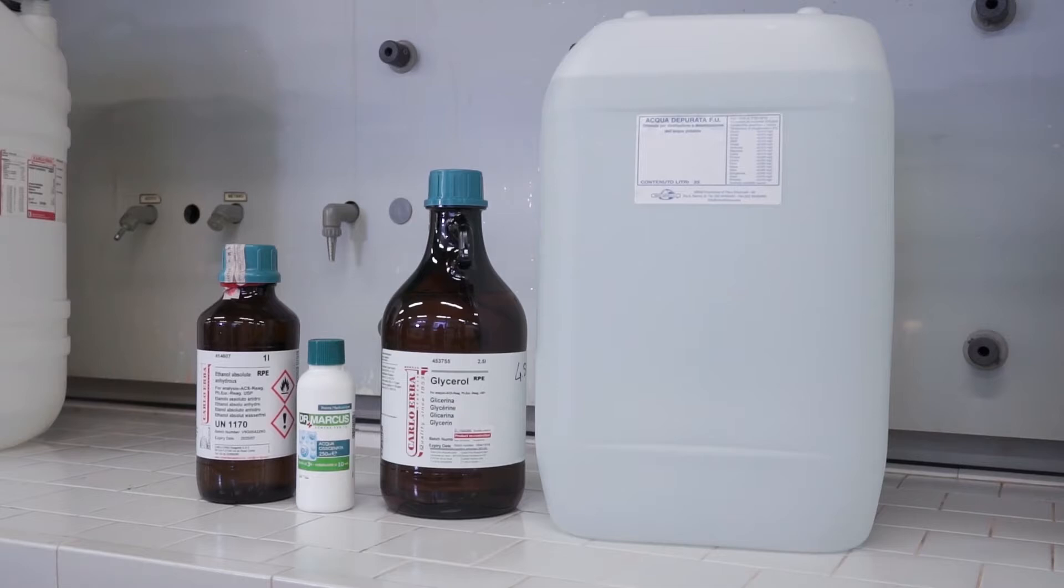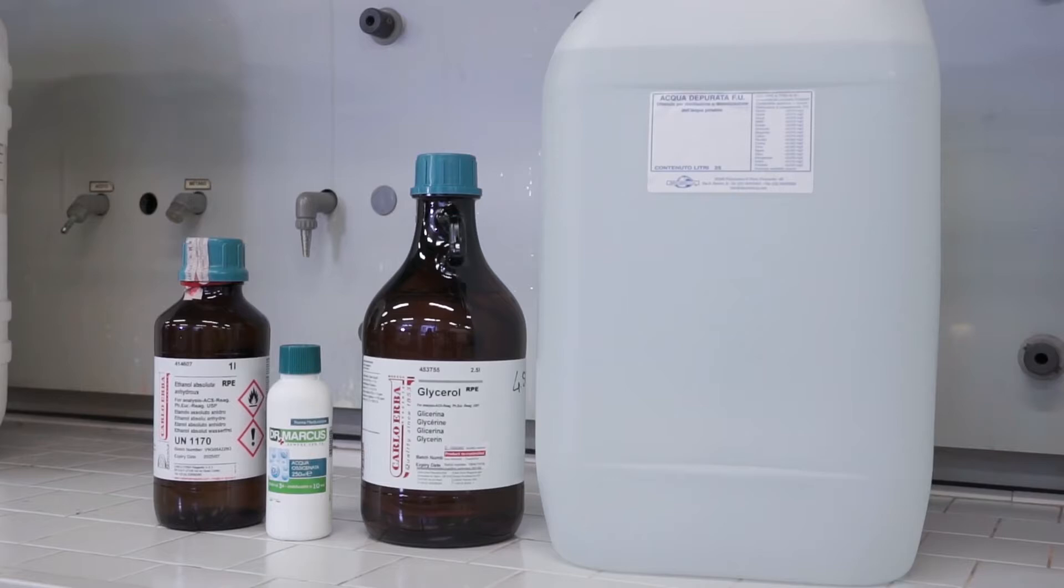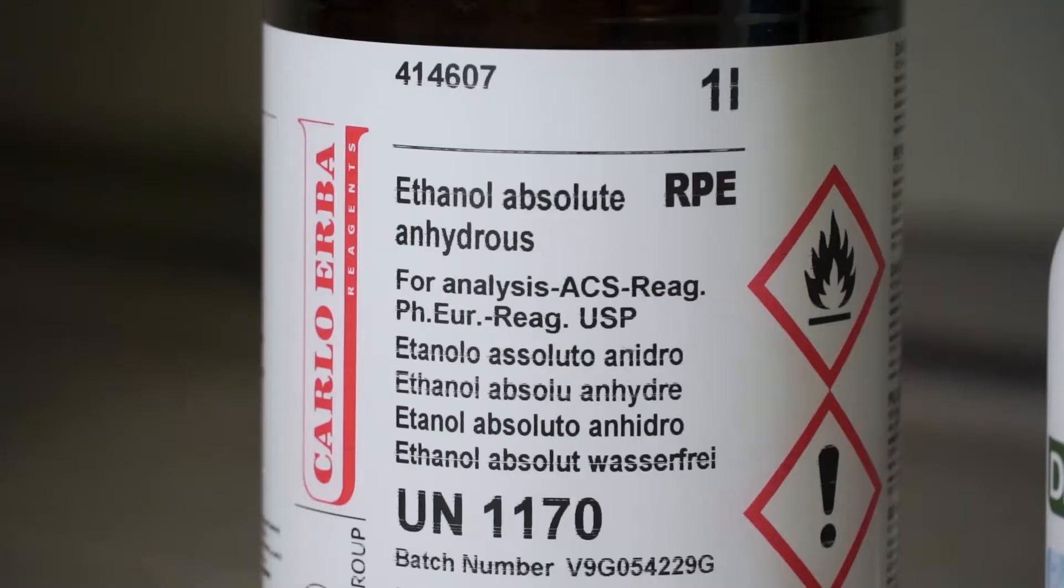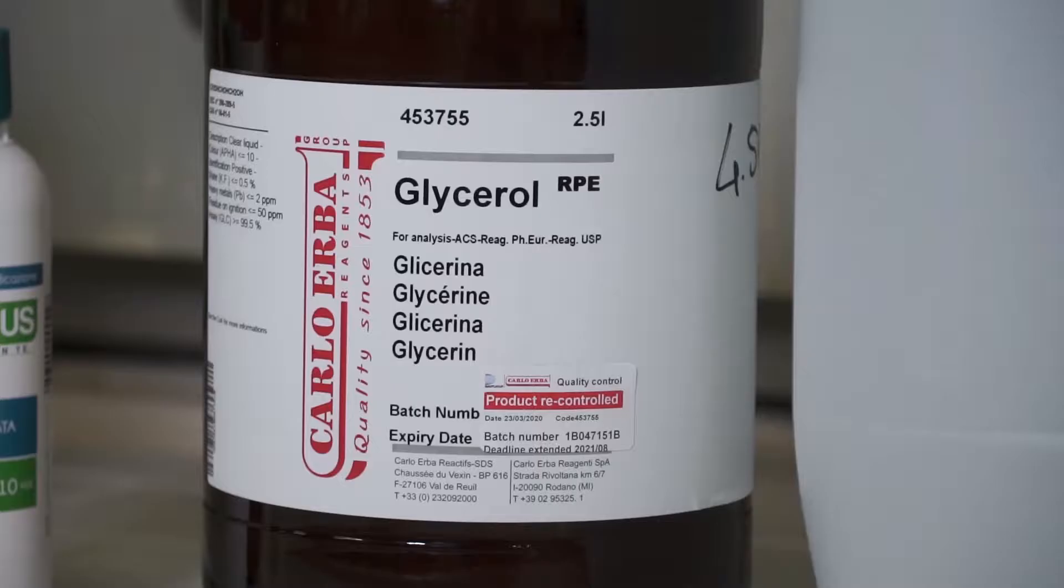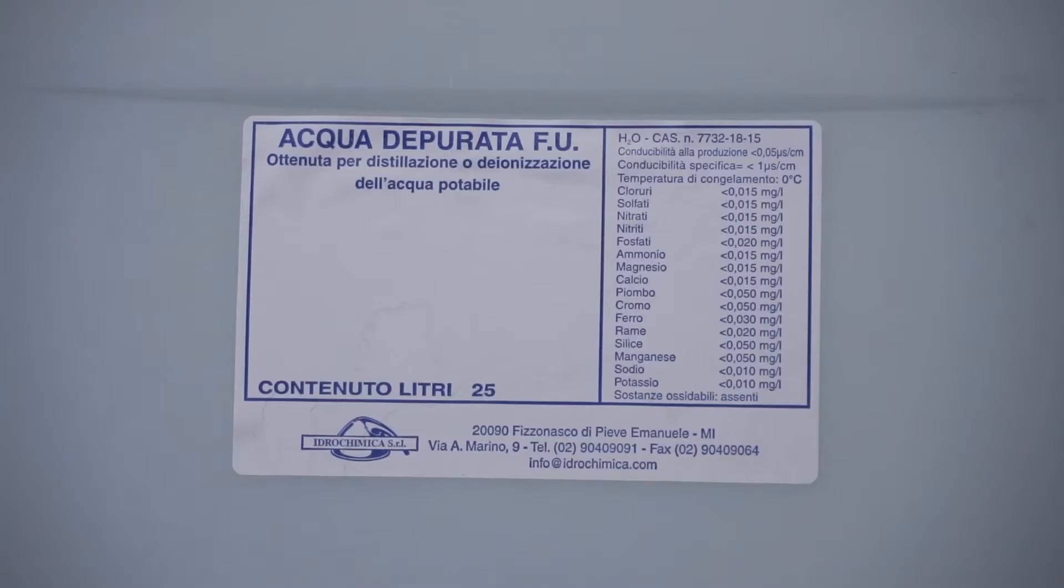The WHO has published two different hand disinfectant formulas, both of which are listed in the attached document. The first formula contains ethanol at 96% volume per volume, hydrogen peroxide, glycerol, and purified water.